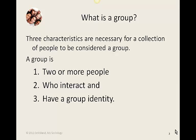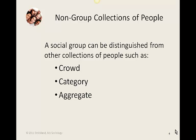There are other collections of people that would not be considered a group in the sociological sense. For example, a crowd is just people that are in the same place at the same time, and this is not a group because they do not necessarily interact or have a group identity.